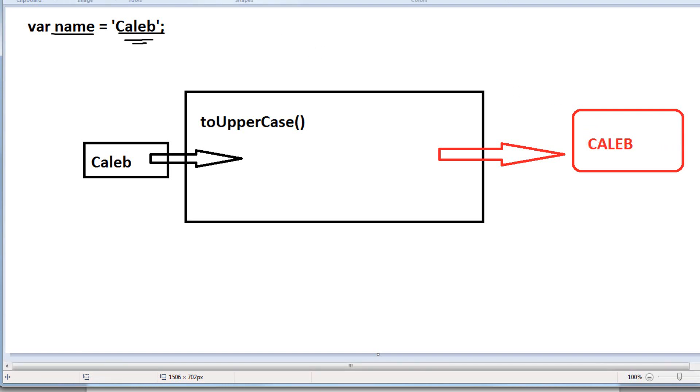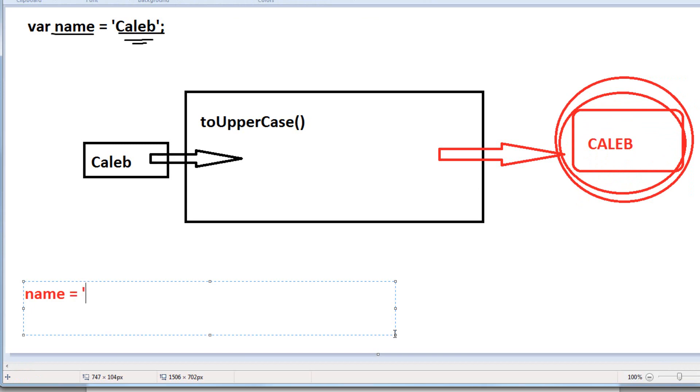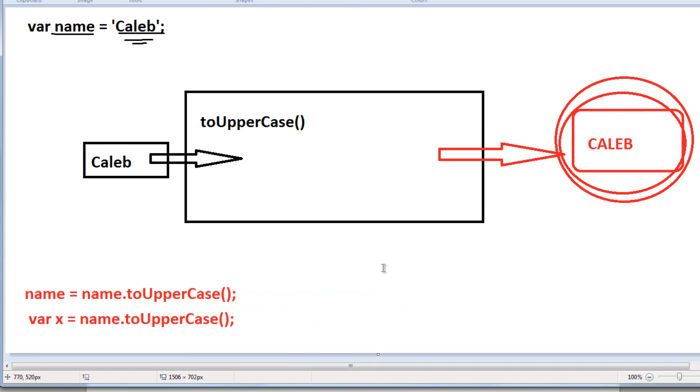Well, this value is just kind of here on its own. It doesn't really do anything because we haven't told it to do anything. Well, we can assign this to a new variable or do something with it. For example, we can reassign to name like this. We can say name is now equal to name to uppercase. Or we can assign it to a new variable. So we could say var x is equal to name to uppercase like this.